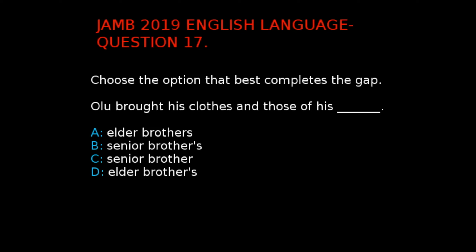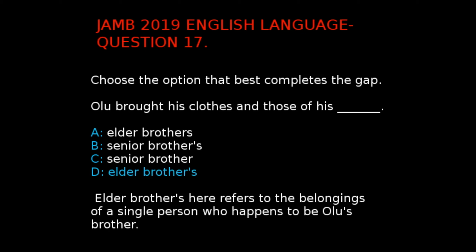Jan 2019 English Language Question 17. The question says, choose the option that best completes the gap: 'Olu brought his clothes and those of his dash.' The options are: A. Elder Brothers, B. Senior Brothers, C. Senior Brother, D. Elder Brothers. The correct answer is D. Elder Brothers. This refers to the belongings of Olu's brother, and in this spelling the apostrophe usually comes after the R and before the S.